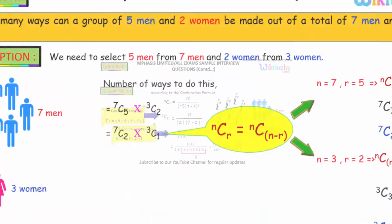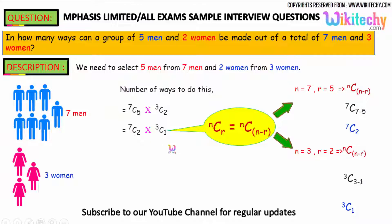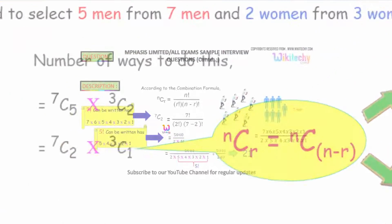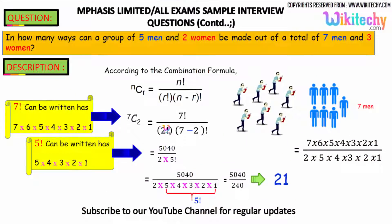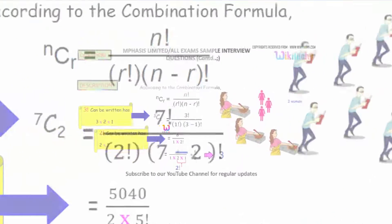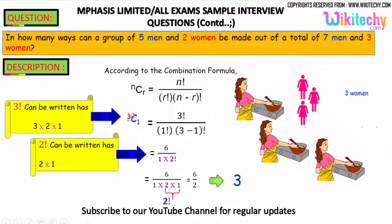So here you are able to see 7C2 is there and 3C1. We have completed 7C2. Now we need to talk about 3C1.